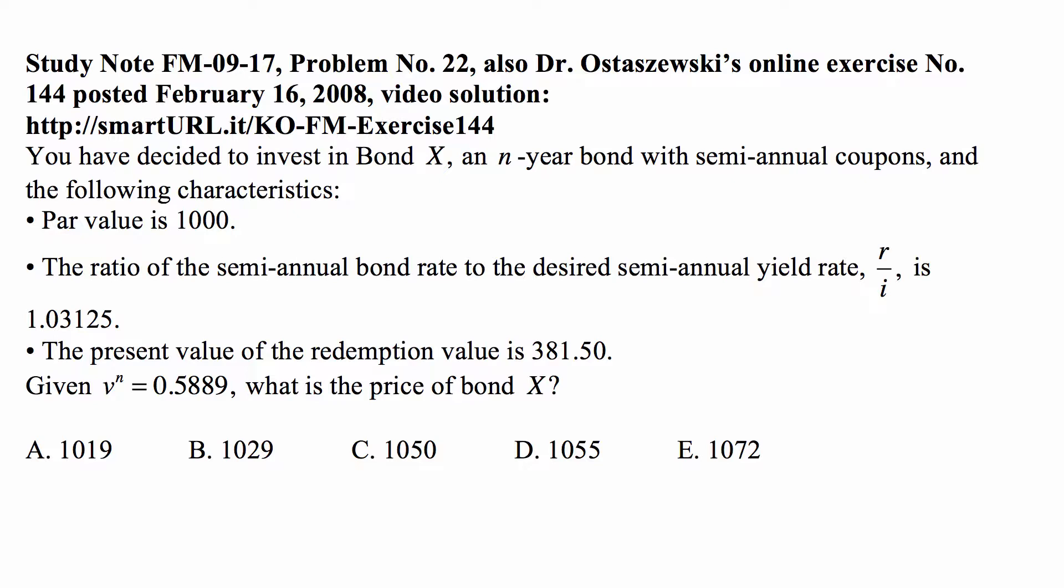The ratio of the semi-annual bond rate to the desired semi-annual yield rate, R over I, is 1.03125. The present value of the redemption value is 381.50. Given that V to the N is equal to 0.5889, what is the price of Bond X?